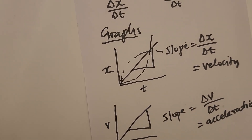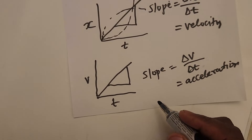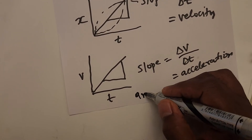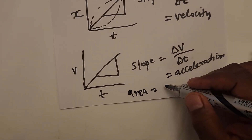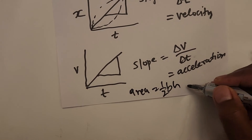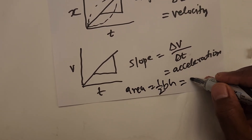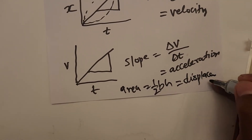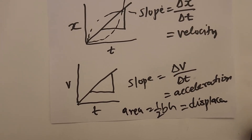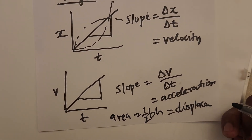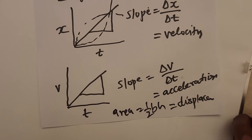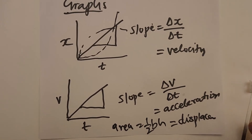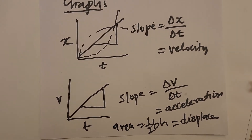Also from the velocity-time graph, the area under the graph — calculated as half base times height — represents displacement or distance. This is important because if they ask you to calculate how far an object has traveled, you can determine that using the graph.